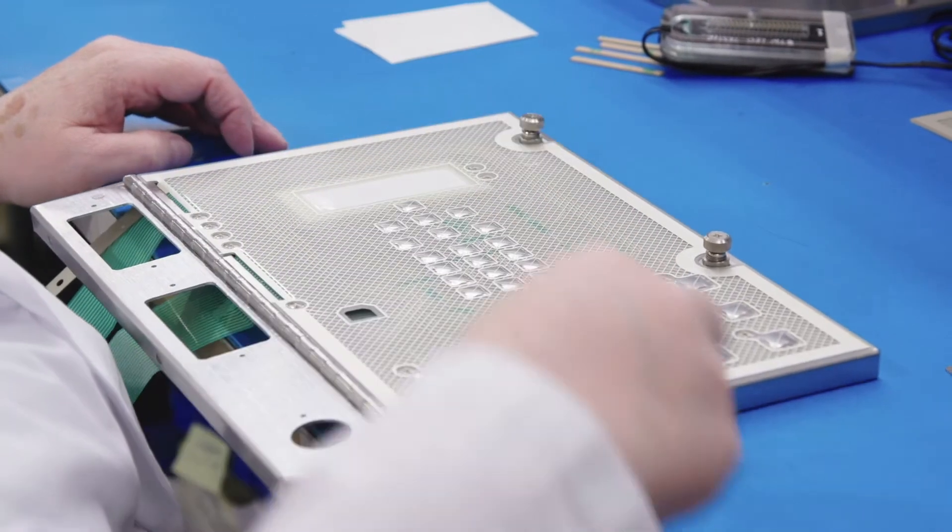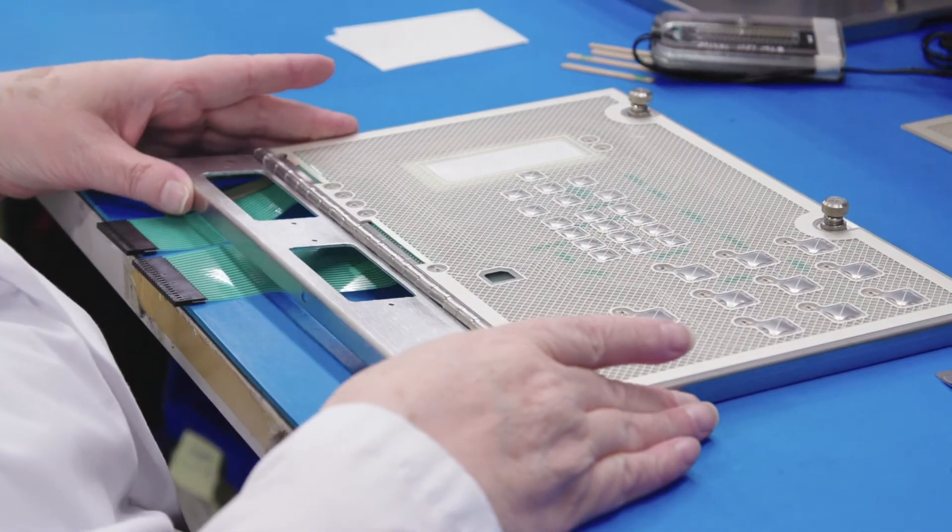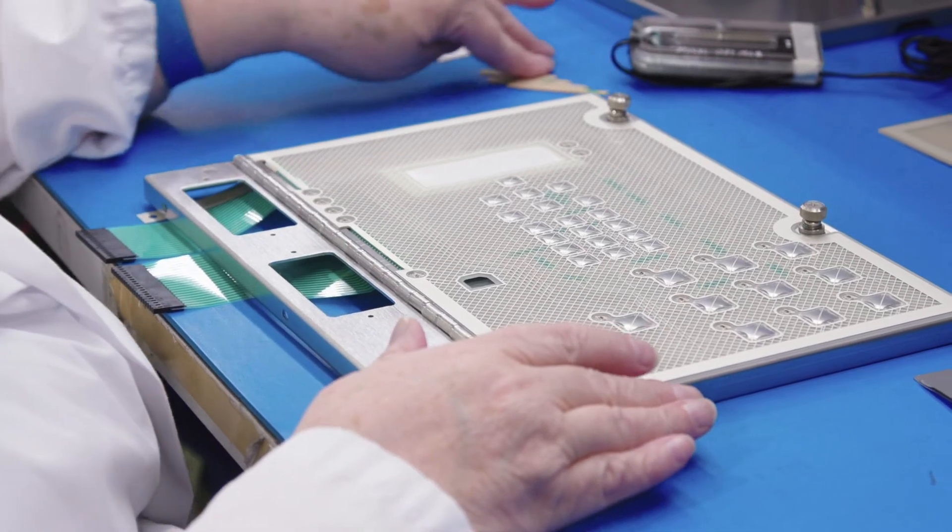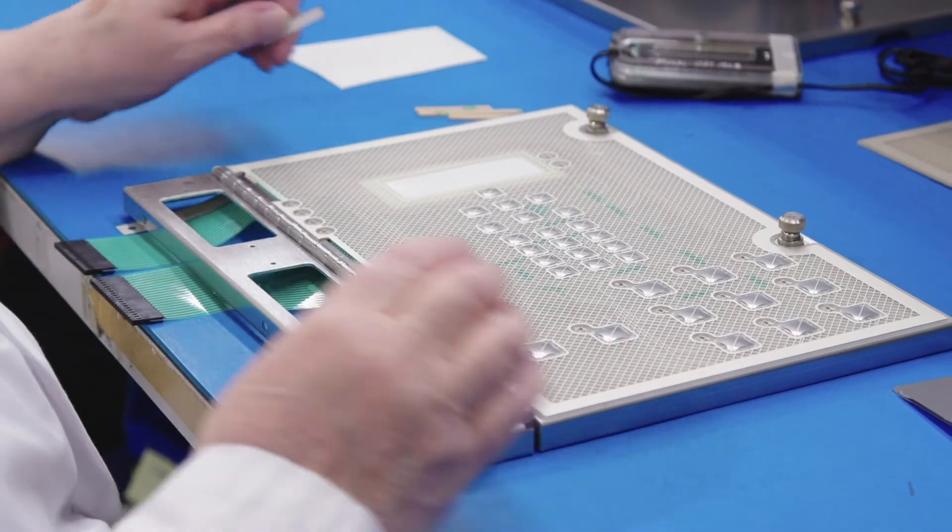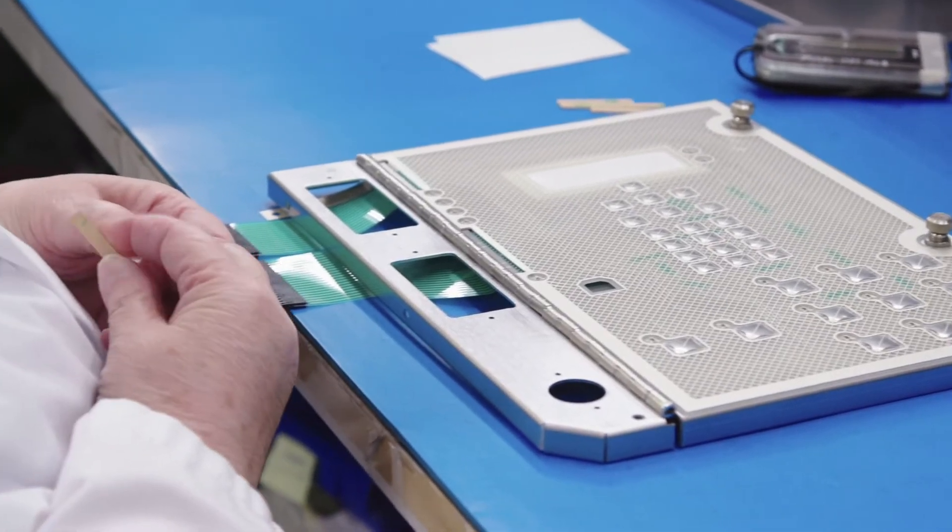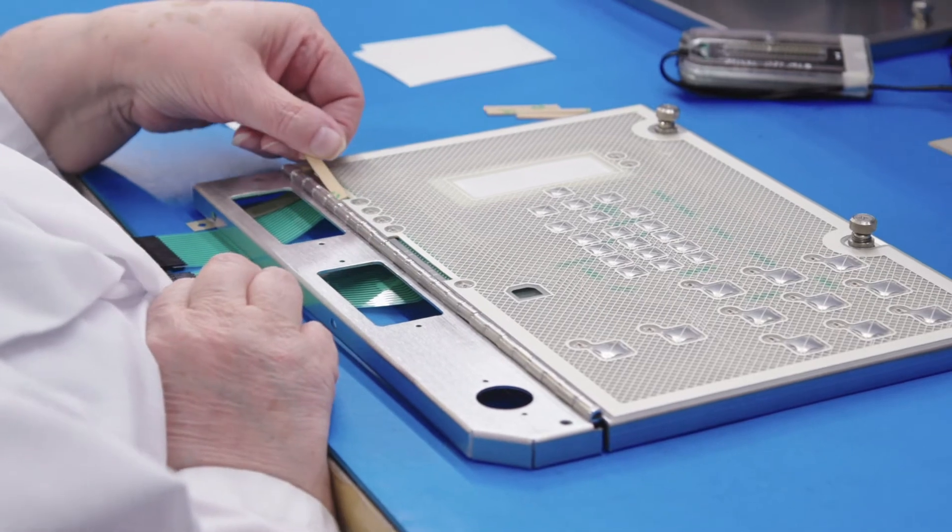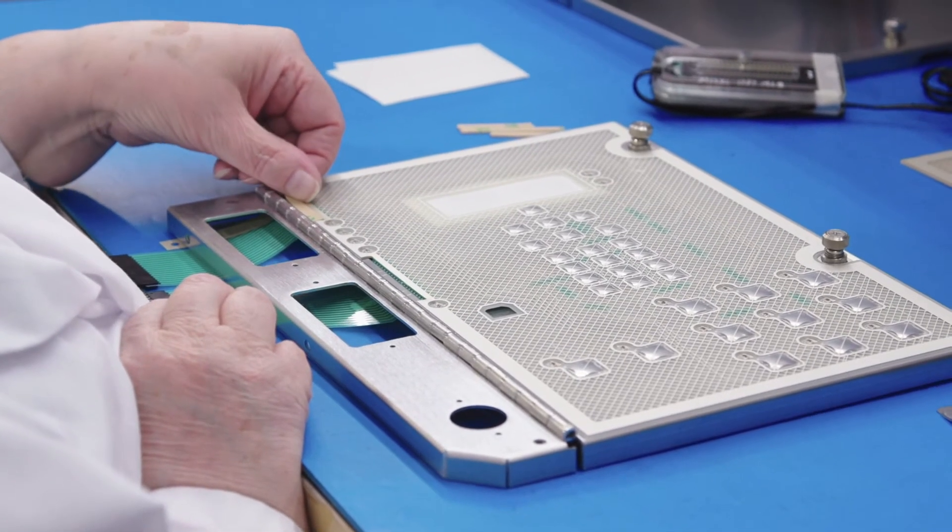The durometer of the squeegee is very important in an application like this because you don't want to harm the LEDs as the squeegee goes over top of them. So even though it's difficult to see in the video, that rubber roller is soft enough to not damage the LEDs or the resistors.